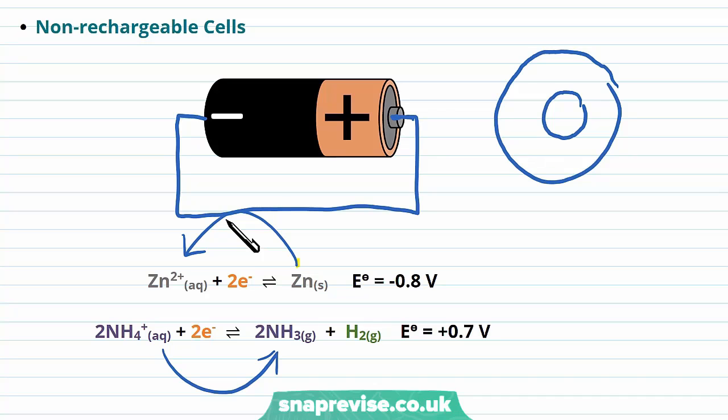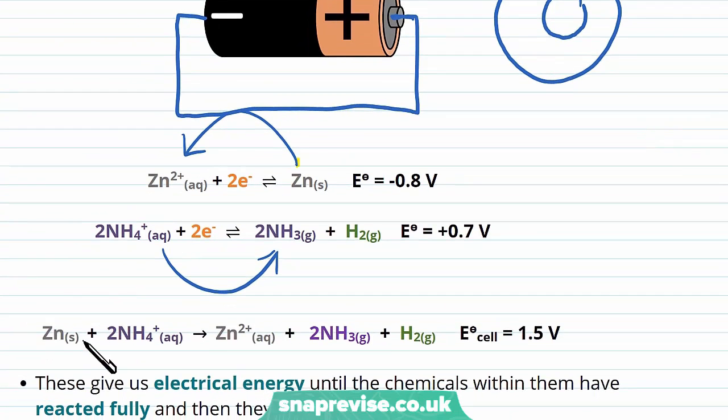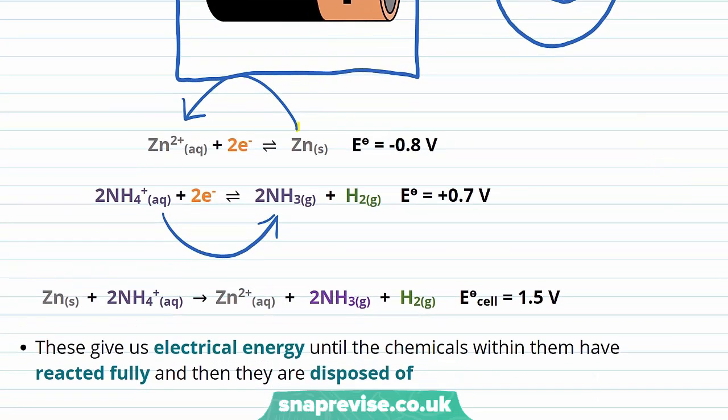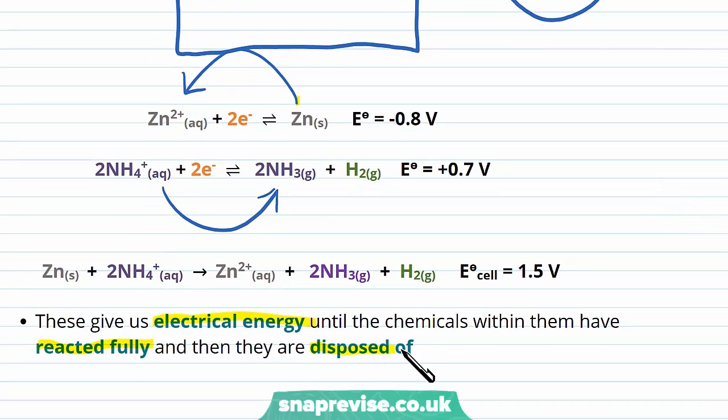Electrons can flow and the reaction will start to happen and the battery will discharge. This is how they give us electrical energy and when all of the chemicals have reacted fully, they are then spent and disposed of because they cannot provide any more electrical energy.